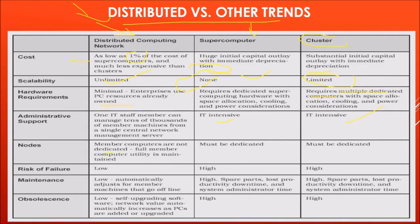Member computers in distributed computing are not fully dedicated — full member computer utility is maintained. Supercomputers and cluster systems must be dedicated. Risk of failure is somewhat low; if a supercomputer goes down, everything goes. Maintenance is quite low — the system automatically adjusts to member machines that go offline — while supercomputer and cluster maintenance is high due to spare parts, productivity downtime, and system administrator time. Obsolescence is also quite low, as self-upgrading software automatically increases network value as PCs are added or upgraded.